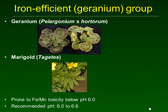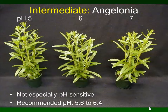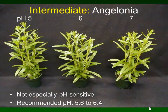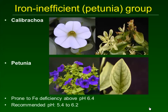Iron-efficient geranium-group plants like marigolds and seed and zonal geraniums are prone to iron manganese toxicity when pH gets too low, so we usually try to grow them at a higher pH. There's an intermediate group — such as angelonia — that are not usually the first to show high or low pH problems; we grow them at a moderate pH of 5.6 to 6.4. Then there's the petunia group of iron-inefficient plants that show iron deficiency very easily at high pH, so we grow them at a low pH target to ensure iron is sufficiently soluble.